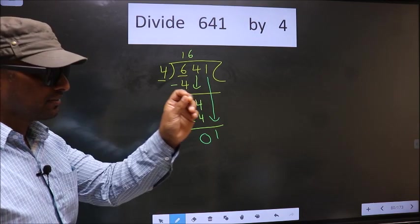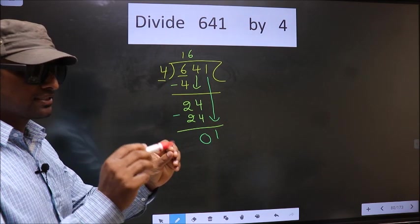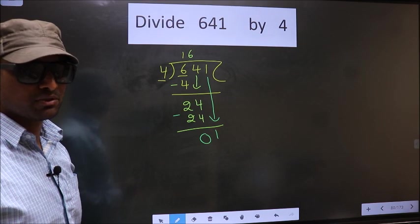I repeat. Bringing the number down and putting a dot and taking 0, both at the same step, you are not supposed to do.